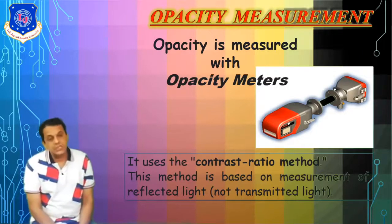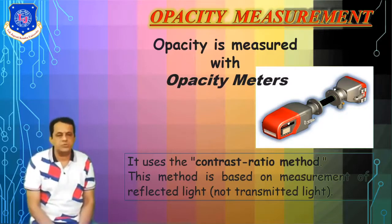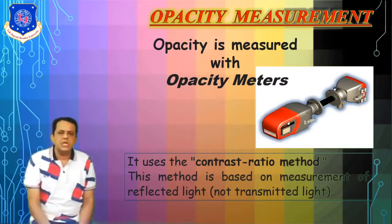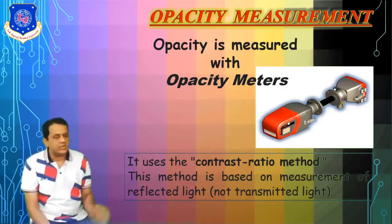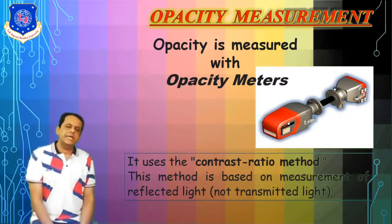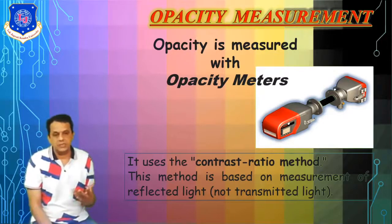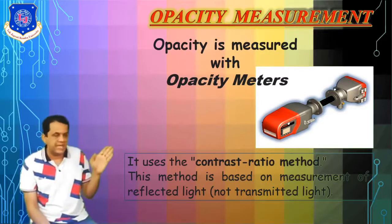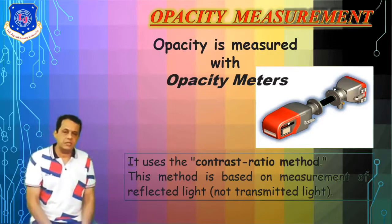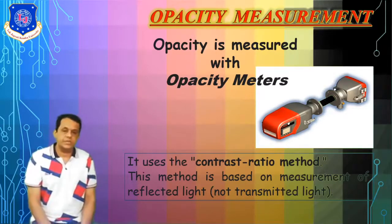This opacity measurement is done with the opacity meter. There is always one zone and another is a reflector, and it works on the contrast ratio method based on reflected light. The incident light is I₀ and the received light is I. Please recall that equation here.